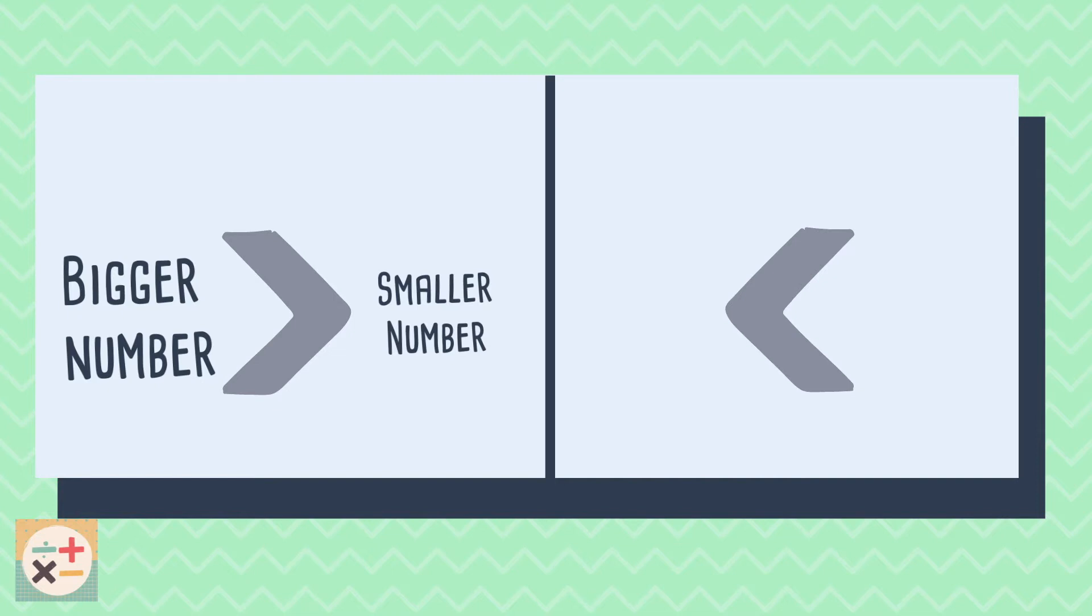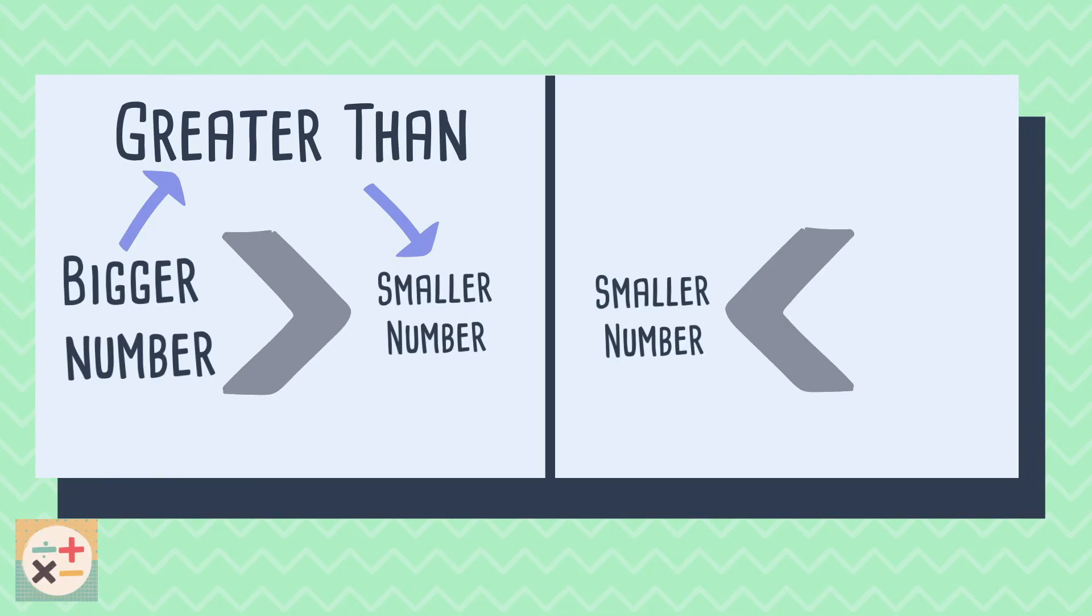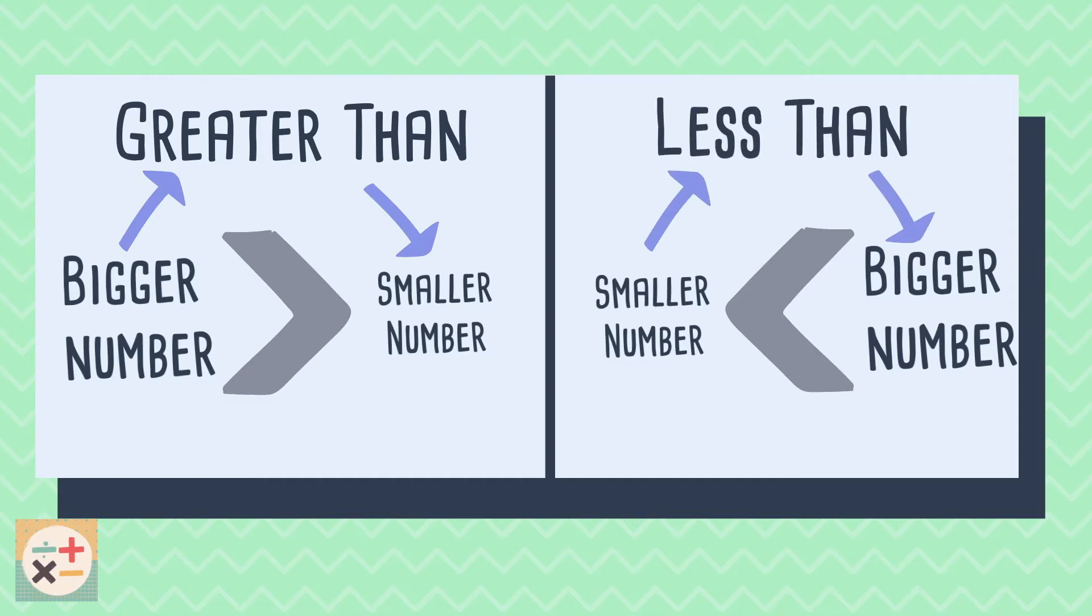When reading inequality symbols, we read them from left to right. So for this symbol, the bigger number is first, so it is greater than the number on the right. With this symbol, the smaller end and smaller number comes first, so this would read as less than the number on the right.